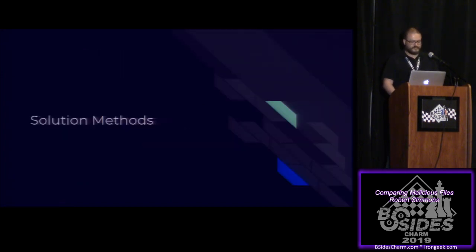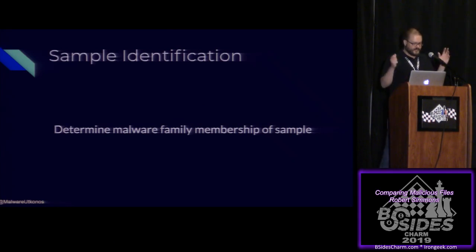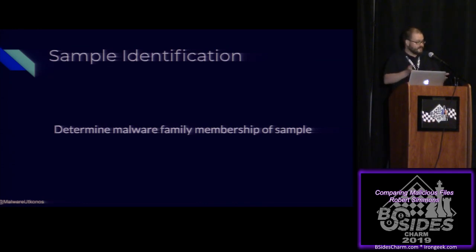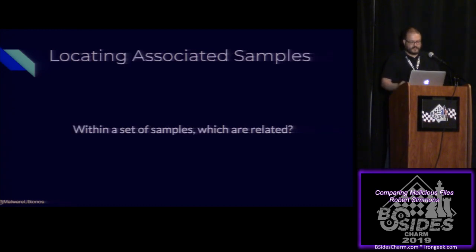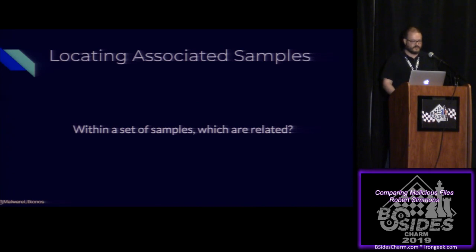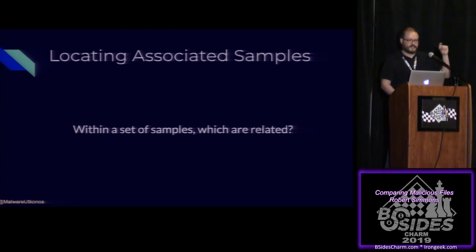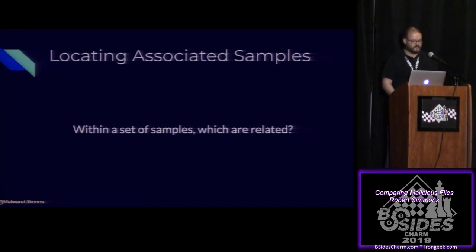For sample identification, you need to determine the malware family membership of a sample if possible. You're not always going to be able to — you could be looking at a new variant, or you might have mislabeled it. Once you know the malware family, you'd hopefully have a larger set of samples to compare against. There are public datasets like the Zoo on GitHub, VirusTotal, various repos, or your own dataset. You take the unknown file you're analyzing and compare it to your repository to determine files that are similar or related.